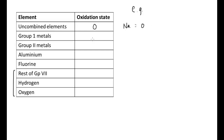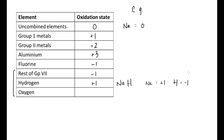Group 1 metals are always given an oxidation state of plus one. Group 2 metals are always given plus two. Aluminium, being in the third group, is given plus three. Fluorine is always minus one. The rest of group 7 is always minus one, but the exception is if they are bonded with fluorine also present, where they would take on a plus one oxidation state. Hydrogen is always plus one, the exception being hydrogen in the form of a metal hydride — sodium hydride, for example — where sodium has plus one and hydrogen would have minus one.